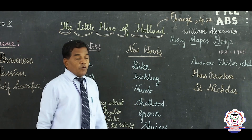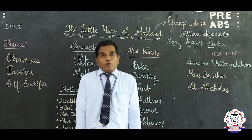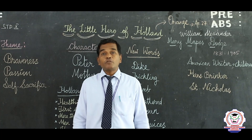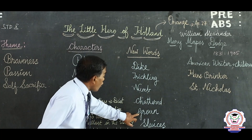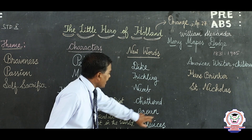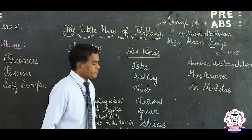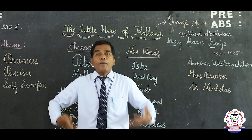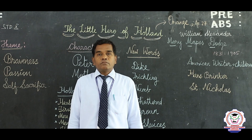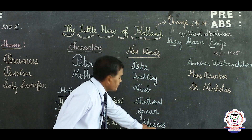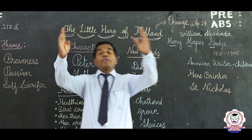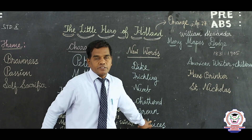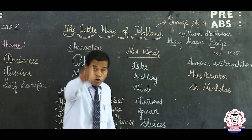'Chattered' — feeling cold and frightened. 'Groan' — G-R-O-A-N — a deep, painful sound. 'Sluices' — an opening; once it comes in the story I will explain it clearly. These are the new words you are going to learn from this story.